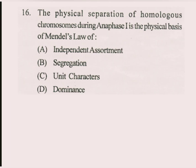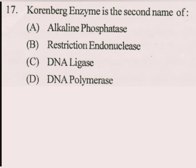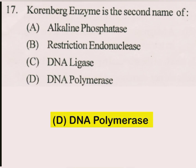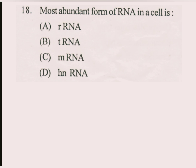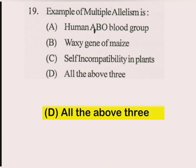Question number 16. The physical separation of homologous chromosomes during meiosis first is the physical basis of Mendel's law of segregation. Question number 17. Kornberg enzyme is the second name of DNA polymerase. Question number 18. Most abundant form of RNA in a cell is rRNA. Question number 19. Example of multiple allelism is: all of the above three.